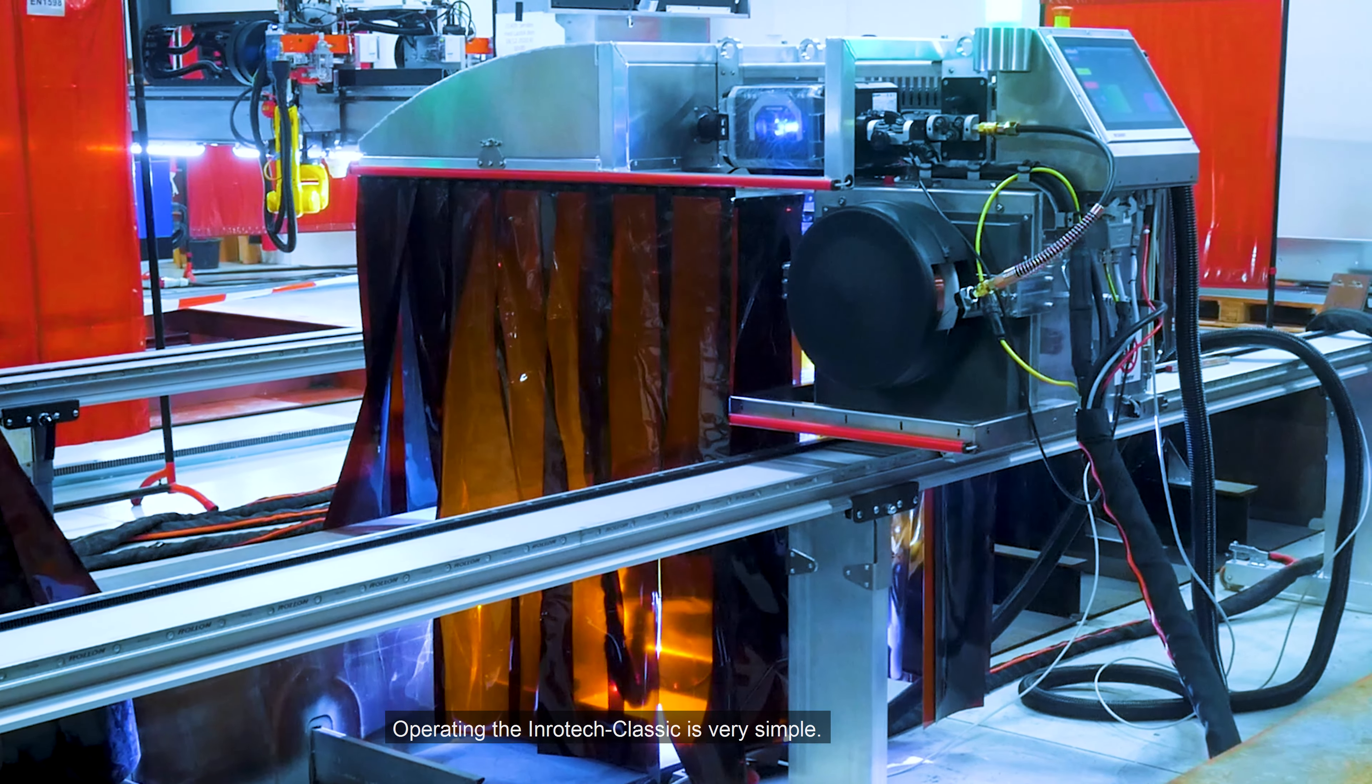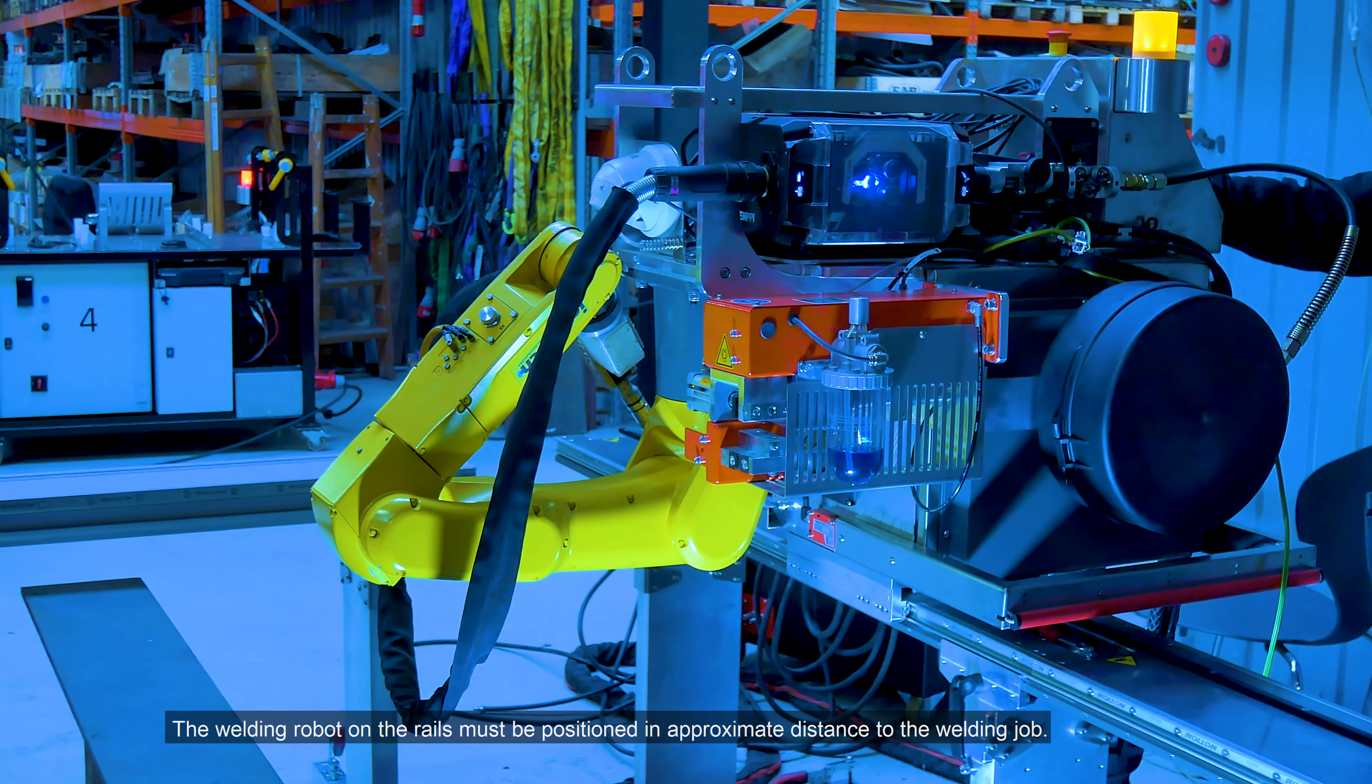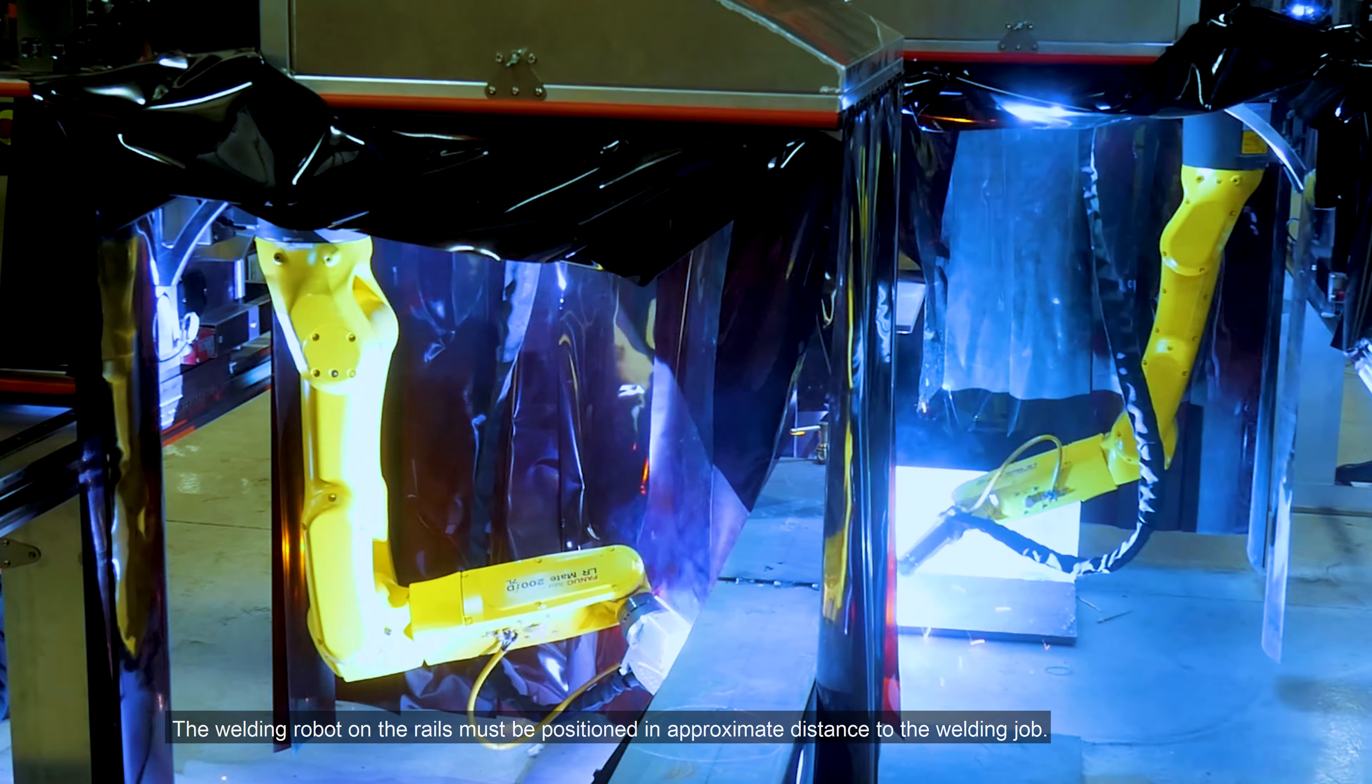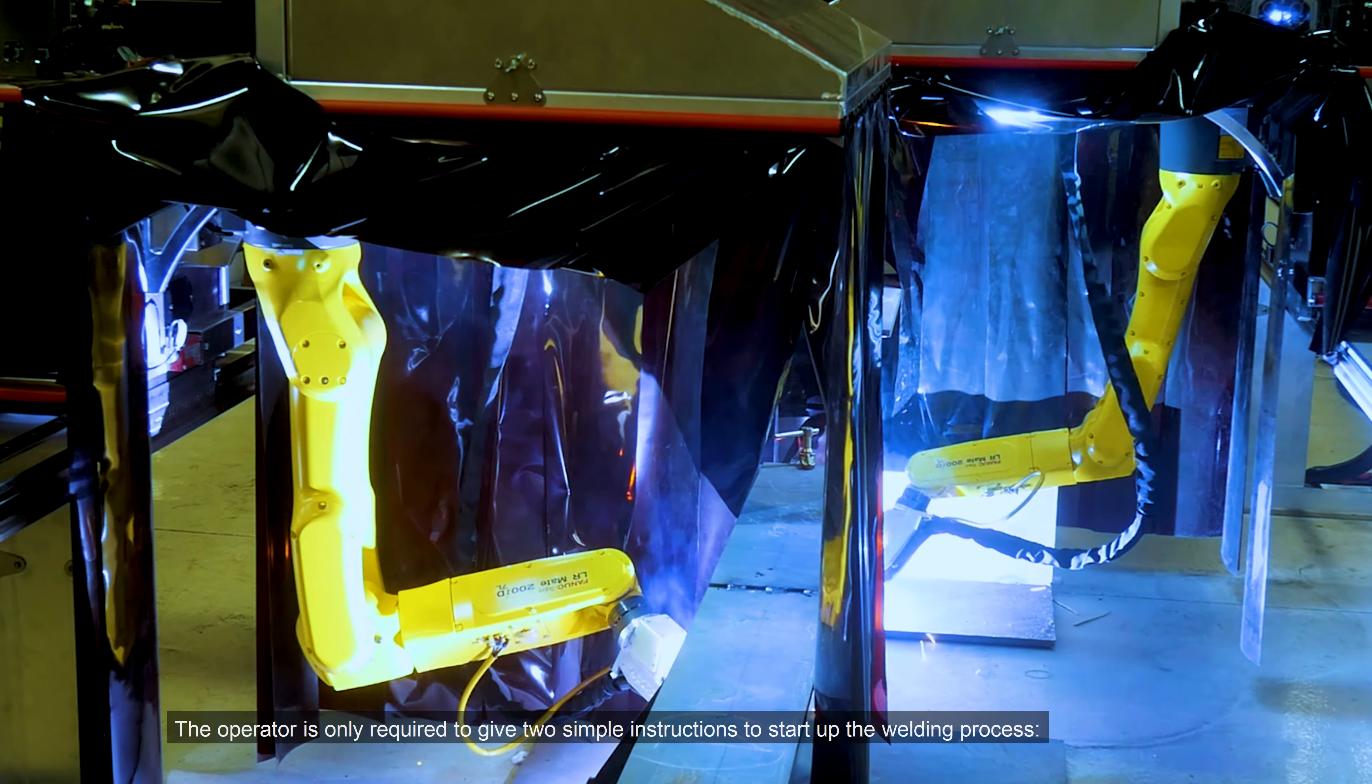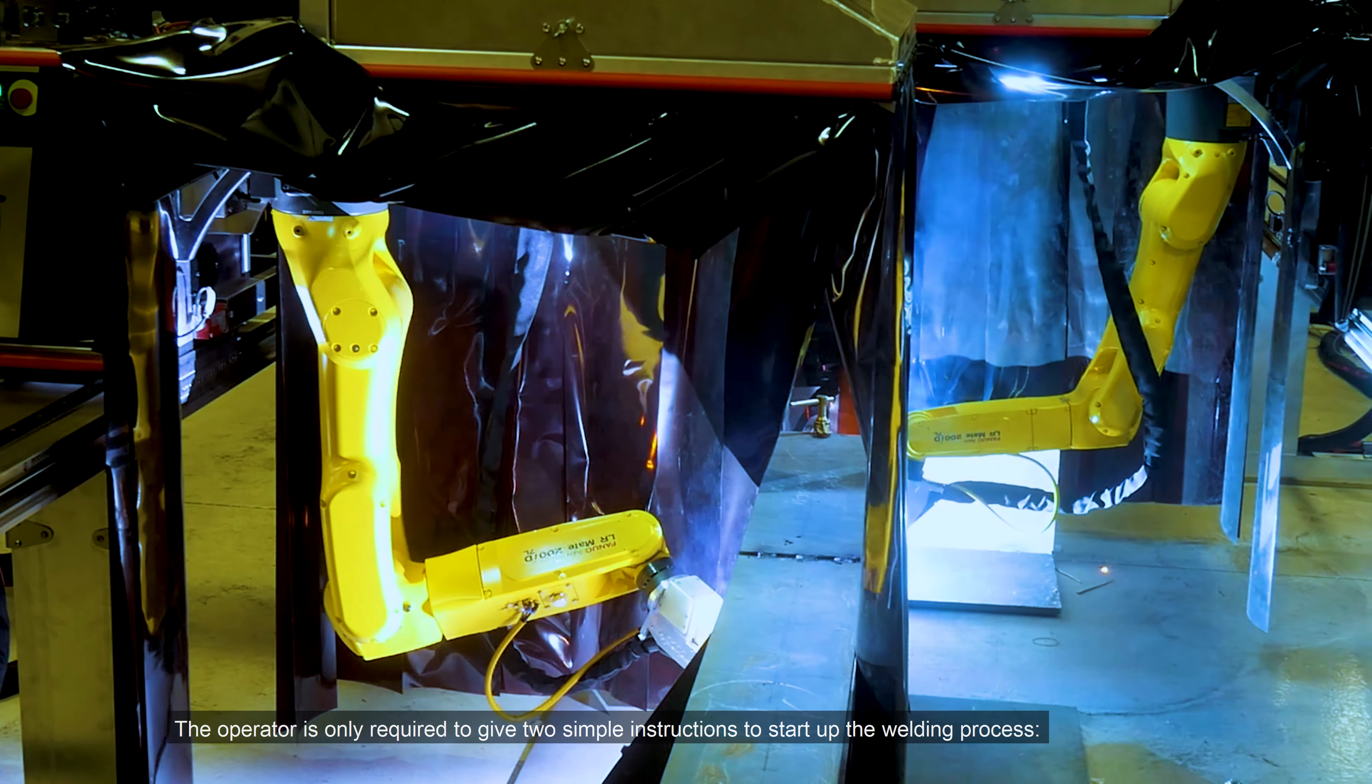Operating the Inrotec Classic is very simple. The welding robot on the rails must be positioned in approximate distance to the welding job. The operator is only required to give two simple instructions to start up the welding process.